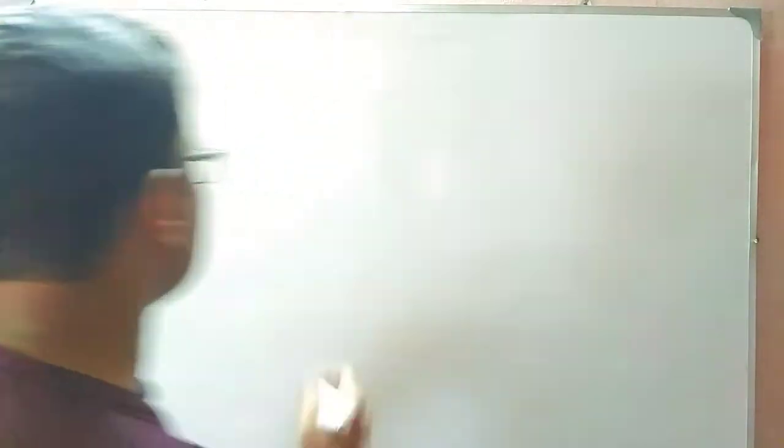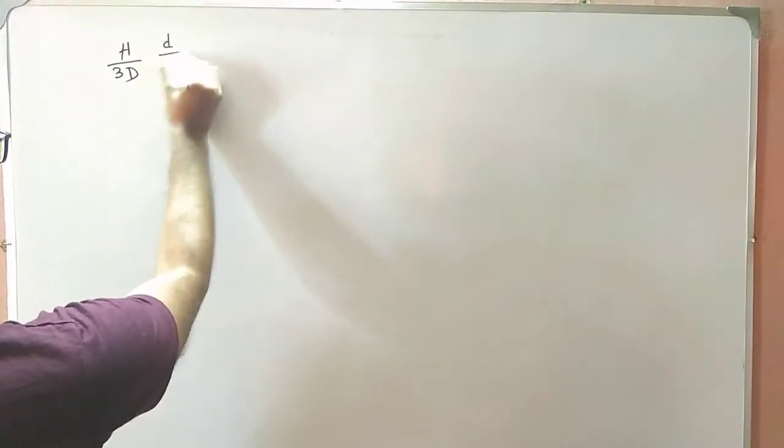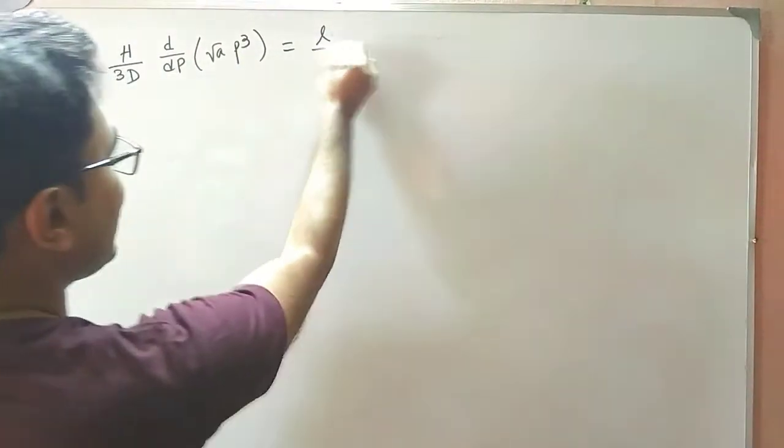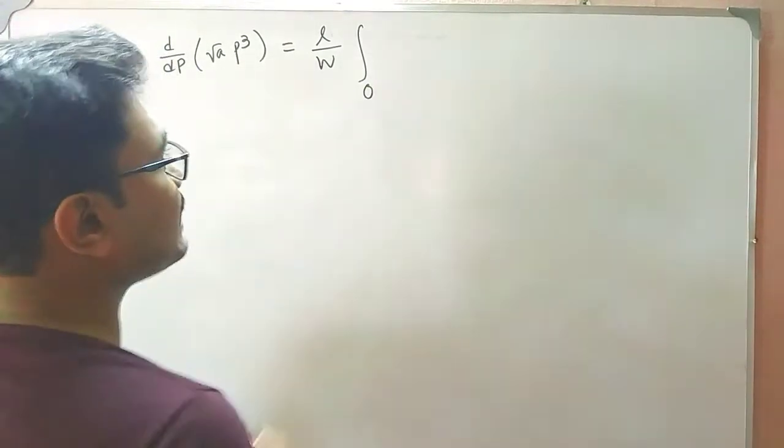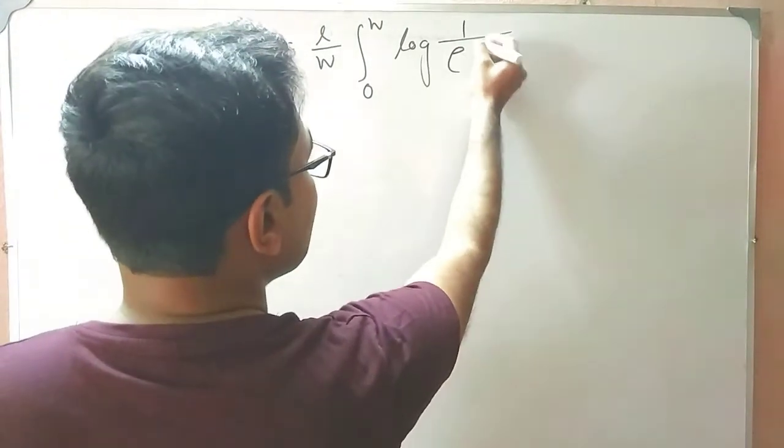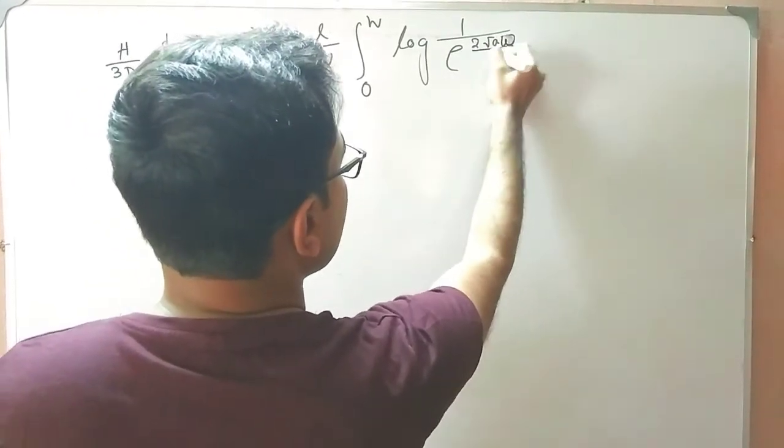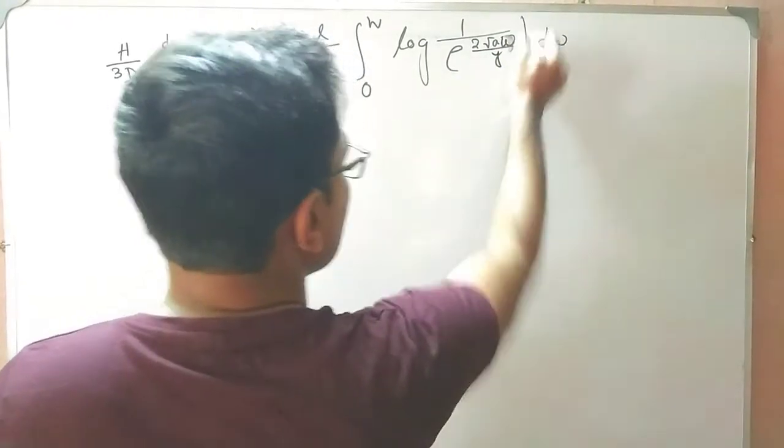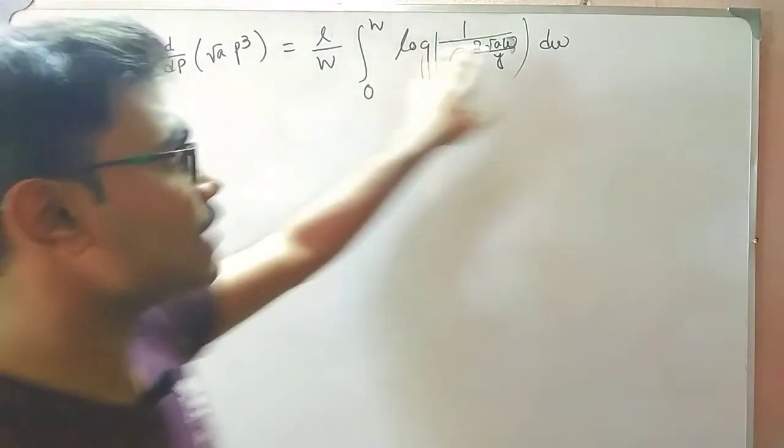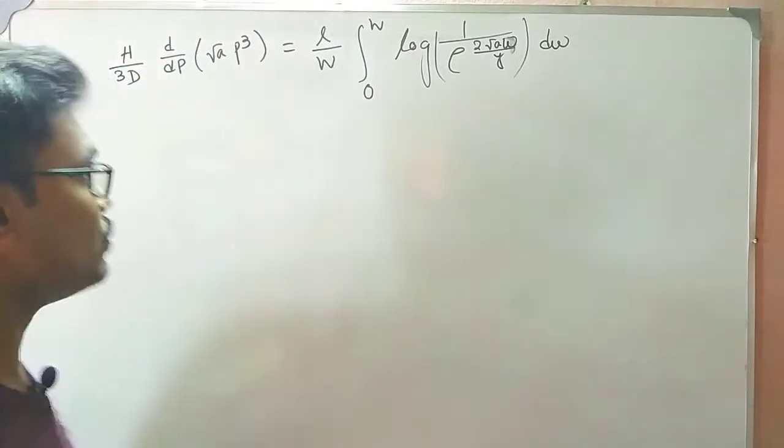So I'm writing the question: H/(3D) * d/dp(√a * p³) = L/W * integral from 0 to W of log(1/e^(2√a*w/y)) dw. Let me clarify here: √a, that means a and y are constants, and the other parts are the variable. You can treat L and W also as constants. So let us start.